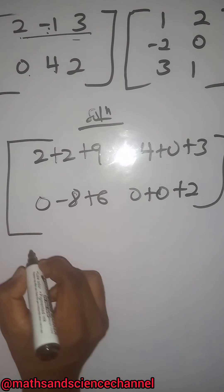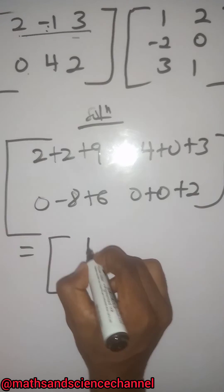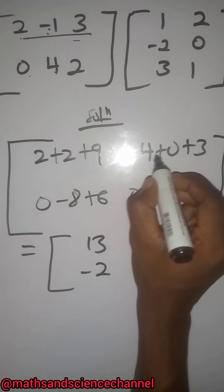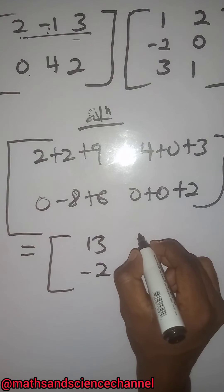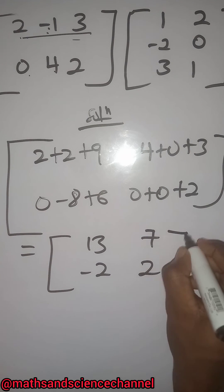Just adding everything up: we have 2 plus 2 which is 4, plus 9 is 13. Negative 8 plus 6 is just negative 2. We have 4 plus 0 plus 3 gives us 7. And 0 plus 0 plus 2 gives us just 2.